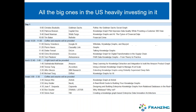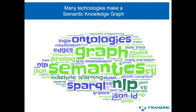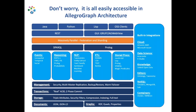Knowledge graphs are complex. There are many different technologies that make a semantic knowledge graph: ontologies, basic graph edges, pipelines for ETL, semantics, machine learning, Prolog for rule-based processing, NLP, and more. People look at this and get kind of scared. But don't worry too much — if you use AllegroGraph, it's all easily accessible in the AllegroGraph architecture.